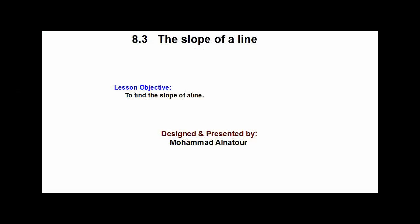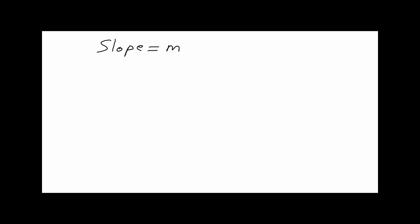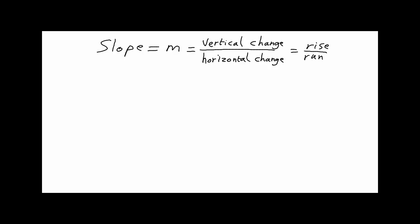Welcome back. Our new lesson is 8.3: The Slope of a Line. Our objective is to find the slope of a line, which is denoted by the small letter m, by dividing the vertical change between any two points on the line by the horizontal change — the rise divided by the run. More formally, m equals the difference in y values (y2 minus y1) over the difference in x values (x2 minus x1).